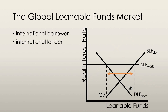An international lender is a country at which the world supply of loanable funds sets the real interest rate. It actually supplies more loanable funds domestically than is demanded. The quantity demanded of loanable funds at this real interest rate is less than the quantity supplied, and so it lends this surplus of loanable funds to the rest of the world — hence it's called an international lender.